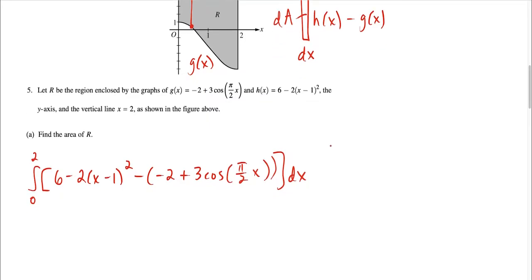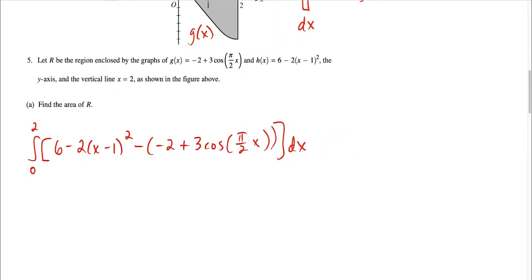h of x is six minus two times x minus one squared. We're going to subtract, and we have to make sure we put g of x in parentheses. We're subtracting negative two plus three cosine pi over two x. I honestly thought that this was the toughest part of the whole question just because it was so tedious. Now all we have to do is just be very careful when we evaluate this. We're going to go piece by piece. The antiderivative of six is six x. The antiderivative of the second piece, you could do a u-substitution.